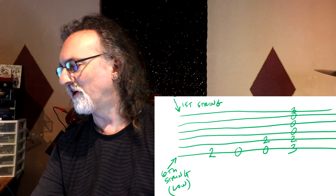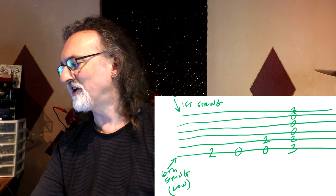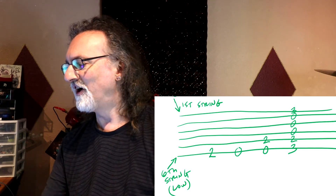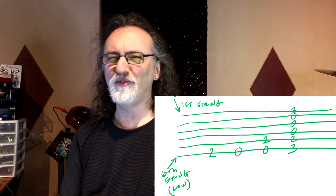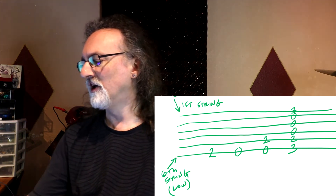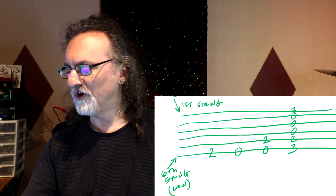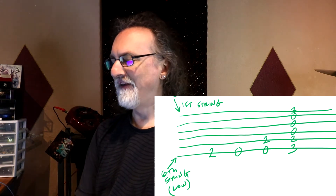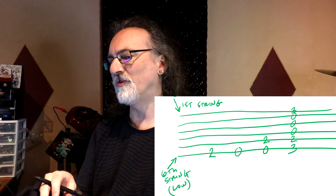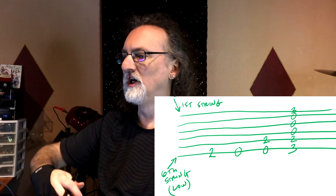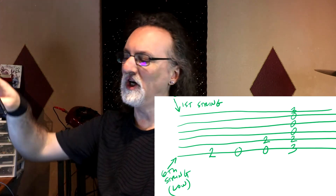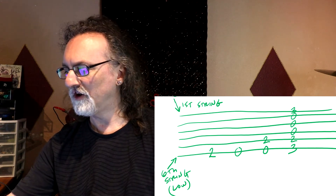Tab stands for tablature, but most people just call it tab. It's a system where you write six parallel lines — which are your horizontal axes representing what string the note is on. The bottom line is the lowest in pitch. Most guitarists refer to that as the sixth string. This is one thing tab shares with regular music notation: lower pitches are towards the bottom of the page and higher pitches towards the top. So the first string is the top line.